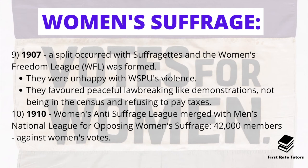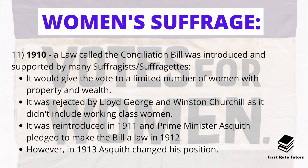In 1910 the Women's Anti-Suffrage League merged with the Men's National League for Opposing Women's Suffrage. This is important because it highlights that not all women supported voting rights — some saw it as breaking with the traditional view of a woman who should be at home looking after children. This merged organisation had 42,000 members who were against women's votes. Also in 1910 the Conciliation Bill was introduced, which would if passed give the vote to a limited number of women with property and wealth. However it was rejected by Lloyd George and Winston Churchill, though some suffragists and suffragettes saw this as a convenient excuse to defer giving women the vote.